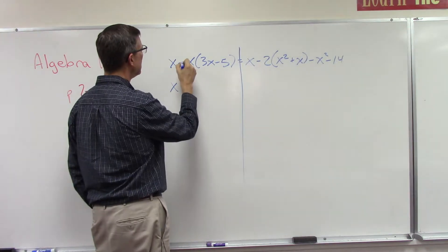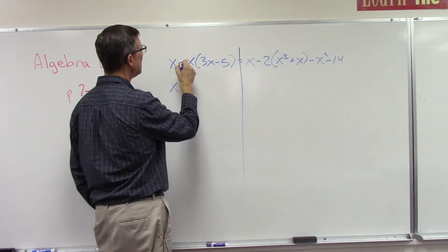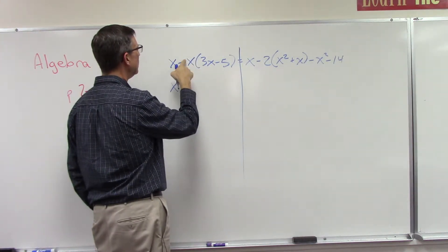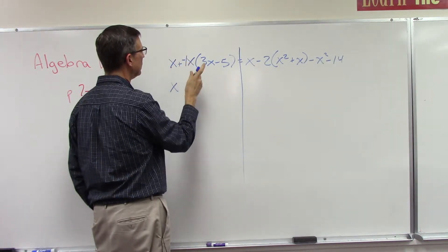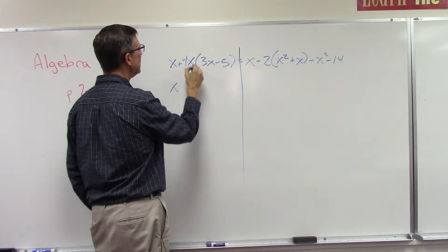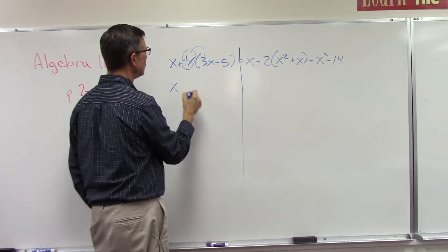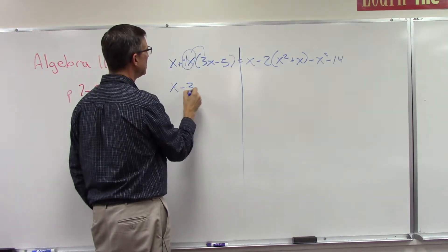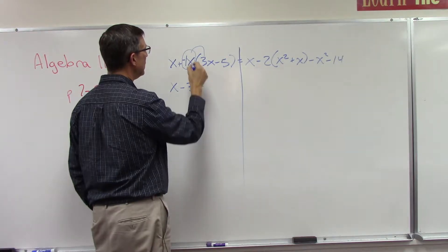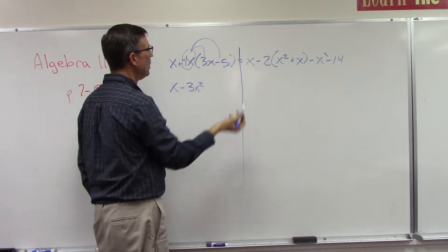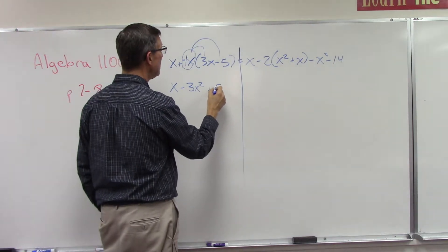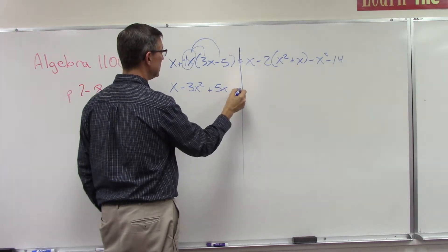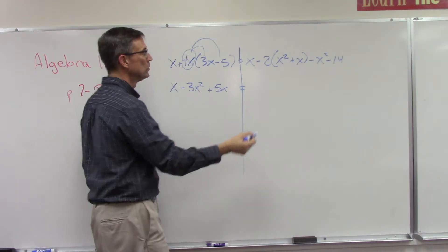Here I'm going to keep this x. I'm going to distribute negative x. You say why is that negative? Well, we can change this to plus negative 1. Okay, so I'm multiplying negative 1x times 3x, I get negative 3x squared. Negative 1x times negative 5x becomes positive 5x squared.